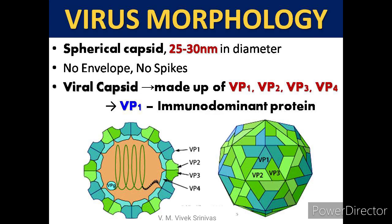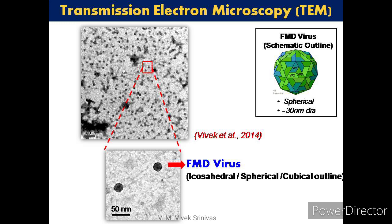Virus morphology: The virus possesses a spherical capsid of about 25 to 30 nanometers in diameter, making it the smallest RNA virus. The virus does not possess an envelope or spikes. The viral capsid is made of four structural proteins: VP1, VP2, VP3, and VP4. Among these, VP1 is the immunodominant protein, playing a major role in antigenicity. Electron microscopy shows the FMD virus appearing spherical at approximately 30 nanometers.